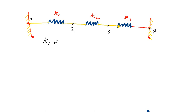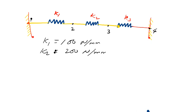K1 is equal to 100 Newton per millimeter, K2 is 200 Newton per millimeter, and K3 is 300 Newton per millimeter. K1, K2, K3 are the stiffness values, and now we consider where the load is applied.